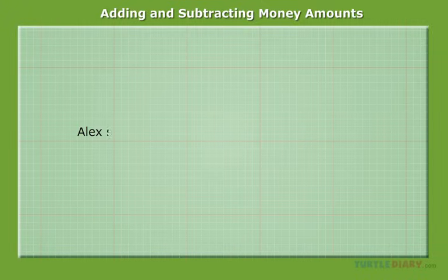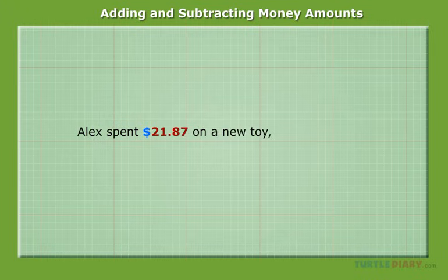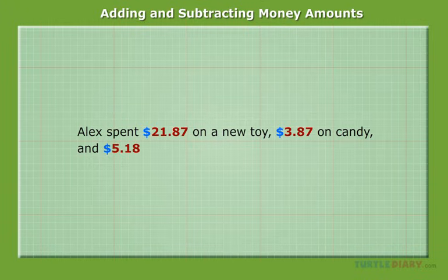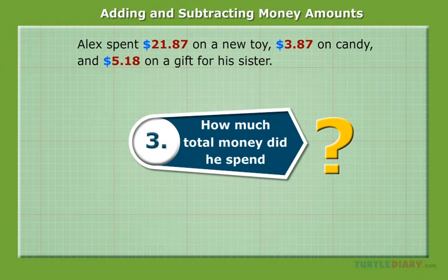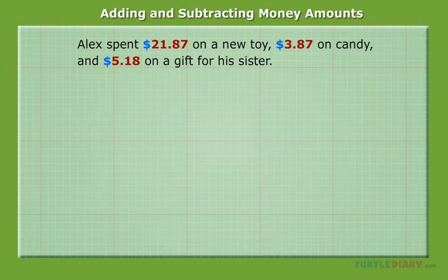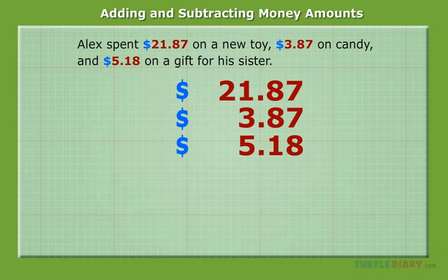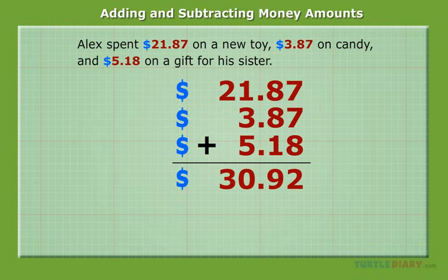Alex spent $21.87 on a new toy, $3.87 on candy, and $5.18 on a gift for his sister. How much total money did he spend? We need to line up the decimals and add as usual. $30.92.